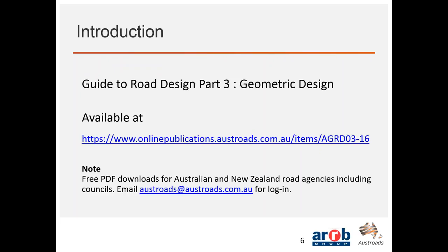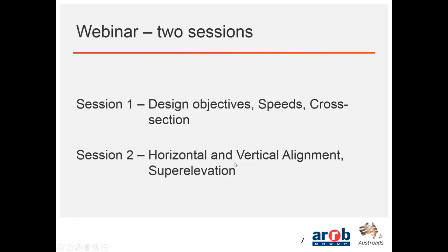Thanks Angela. It's worth reiterating where we can get the Guide to Road Design Part 3 — in fact, all the Austroads publications are at their web address. If you're a road agency or council, obtain a login from Austroads and you can download them for free. Our webinar comprised two sessions: session one last week covered design objectives, speeds and cross-section; today, session two, we're covering horizontal and vertical alignment and superelevation.